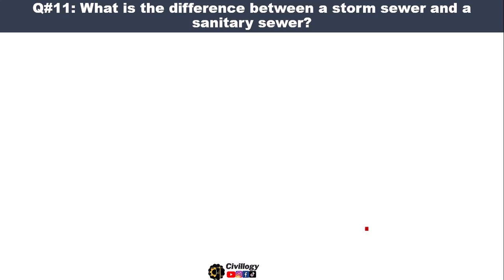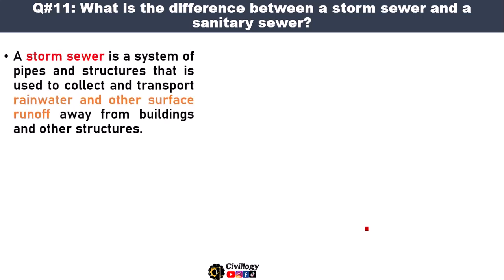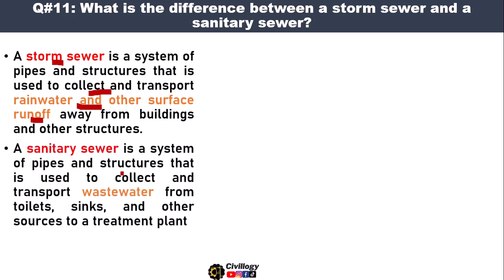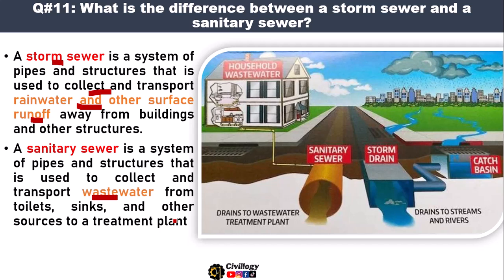Question number eleven: what is the difference between a storm sewer and a sanitary sewer? A sanitary sewer is a system of pipes and structures that is used to collect and transport wastewater from toilets, sinks, and other sources to the treatment plant. Whereas a storm sewer collects runoff from rainfall, which flows into the catch basin and then into the storm drains.